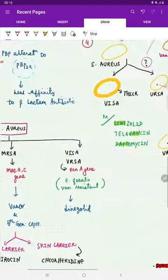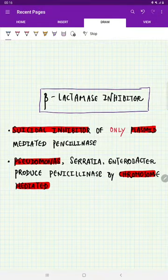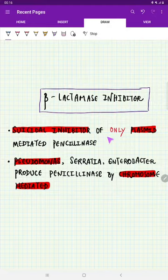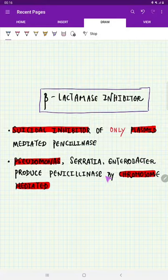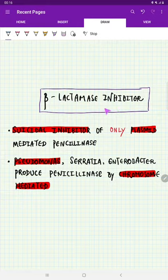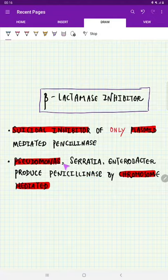Now, after this, we are coming to one important pharmacological point. Beta-lactamase inhibitors are suicidal inhibitors, and they are going to act only on plasmid-mediated penicillinase. That means there are bacteria like Pseudomonas, Serratia, Enterobacter that are producing penicillinase, but not through plasmid, through chromosomes. So if at all you are going to apply this beta-lactamase inhibitor, this is not going to act on chromosome-mediated penicillinase production by Pseudomonas and Serratia. This is one important point.